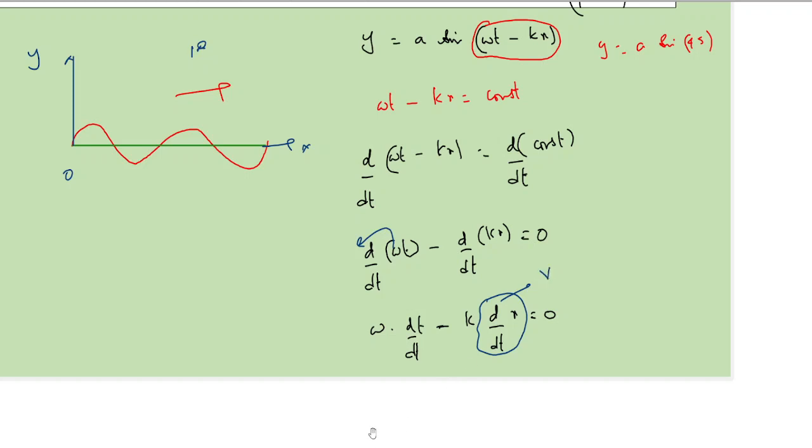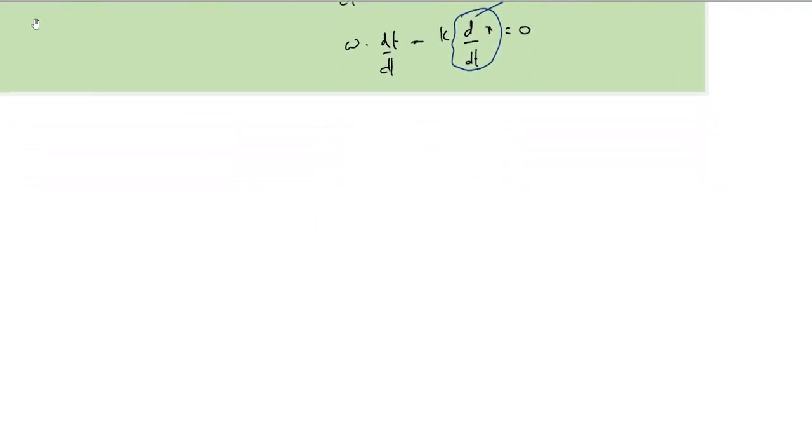Therefore, putting it back here, omega into 1 minus k into dx/dt is equal to 0, so omega is equal to k into v. Therefore, v is equal to omega by k, which is the wave velocity equation.